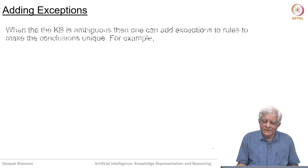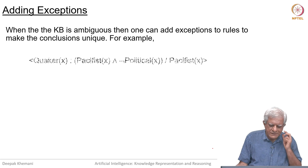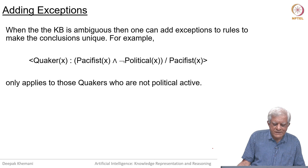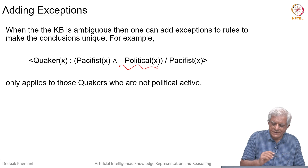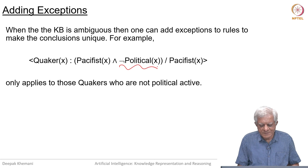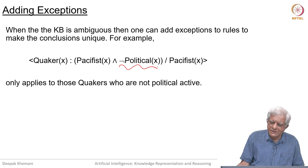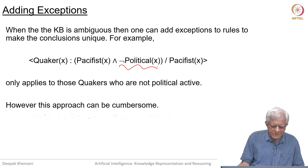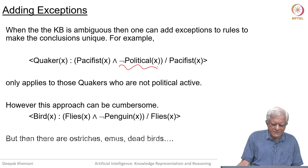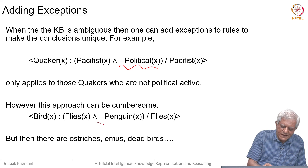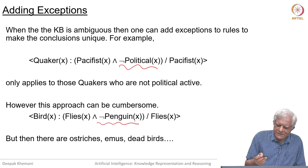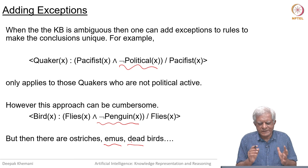We can get around ambiguity by adding exceptions to rules. For example, we say: if X is a Quaker and it is consistent that X is pacifist and X is not political, then X must be a pacifist — applying only to Quakers who are not politically active. We can do the same with birds by adding the condition that if X is not a penguin then X can fly, but then we would have to keep adding other exceptions, and this whole approach does not work out very neatly.